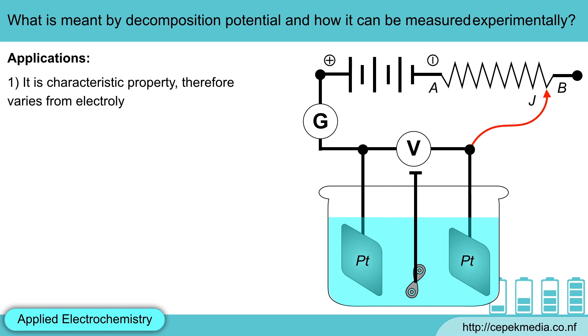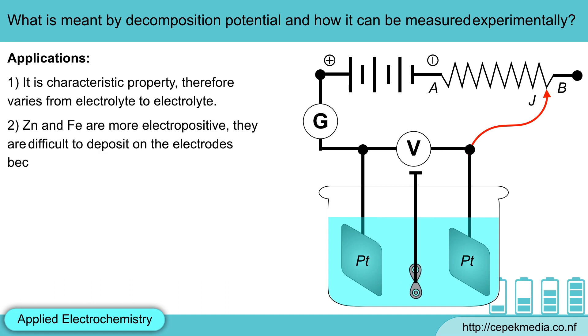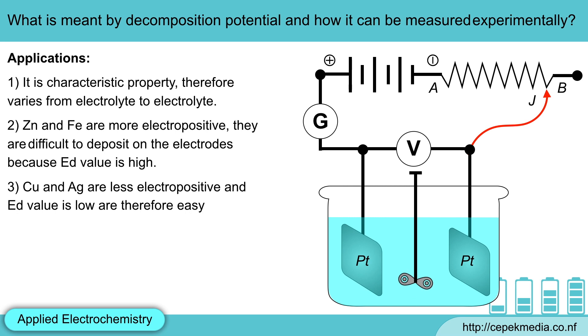The main applications of decomposition potentials are it is characteristic property, therefore, varies from electrolyte to electrolyte. Zinc and iron are more electropositive. They are difficult to deposit on the electrodes because decomposition potential value is high. Copper and silver are less electropositive and decomposition potential value is low and therefore, they are easy to deposit.